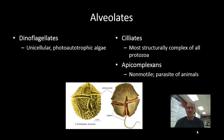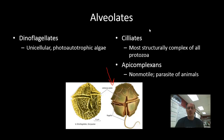The second subgroup in the Chromalveolata supergroup is the alveolates. Alveolates are so named because of the presence of alveoli — air sacs found beneath the membrane. Some members of the alveolates include the dinoflagellates, which are unicellular photo-autotrophic algae that use sunlight to produce energy. They also have a cell plate made of cellulose, the same substance plants use to make their cell walls.